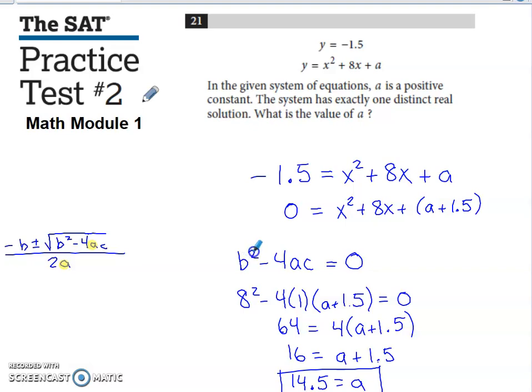So what I did is I took what was under the root, which is called the discriminant, not the determinant, that's for matrices, the discriminant of the quadratic formula, and I set that equal to zero. And then I plugged in the values that we talked about a minute ago, so 8 went in place of B, 1 went in place of the A from the discriminant, and then A plus 1.5 went in place of the C.